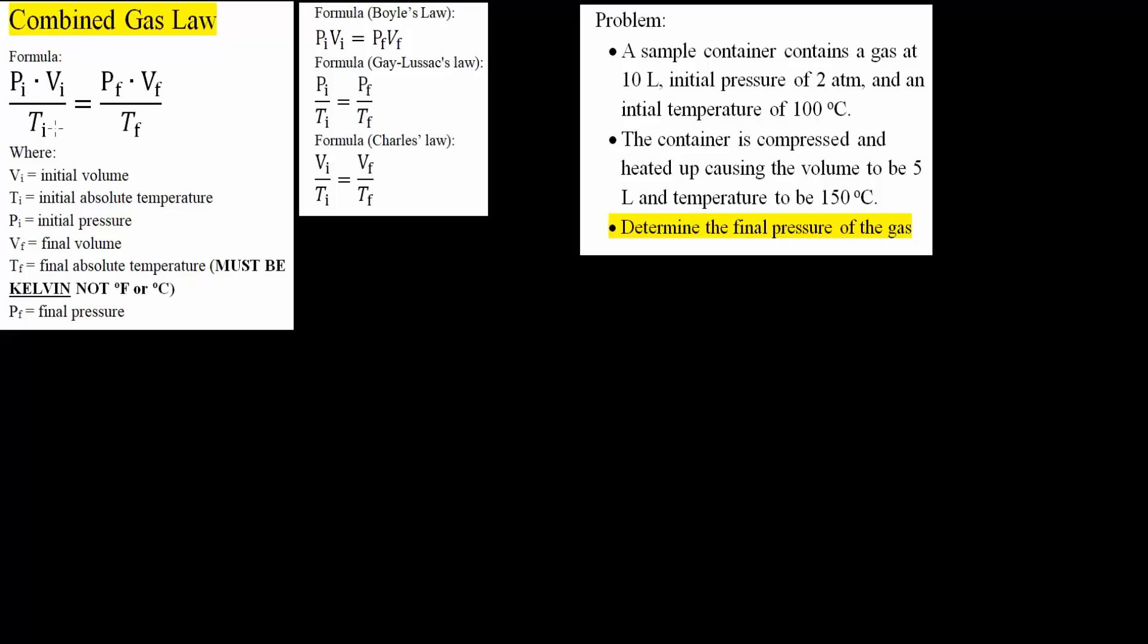This equation is useful if there's maybe like two changes. In our case, in our problem, two things are changing, and we're trying to find one thing. We're trying to find pressure. For example, volume is changing, and final temperature is changing.